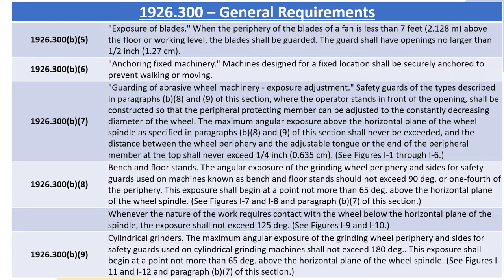Safety guards of the types described in paragraphs (b)(8) and (b)(9) can be adjusted to the constantly decreasing diameter of the wheel. The maximum angular exposure above the horizontal plane of the wheel spindle as specified in those paragraphs shall never be exceeded, and the distance between the wheel periphery and the adjustable tongue or the end of the peripheral member at the top shall never exceed a quarter inch (0.635 centimeters). See figures I-1 through I-6.